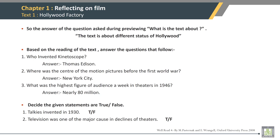Decide if the given statements are true or false. Talkies were invented in 1930 — this is a false statement. Television was one of the major causes of the decline of theaters — this is a true statement. That is the end of Text 1, Chapter 1. Thank you.